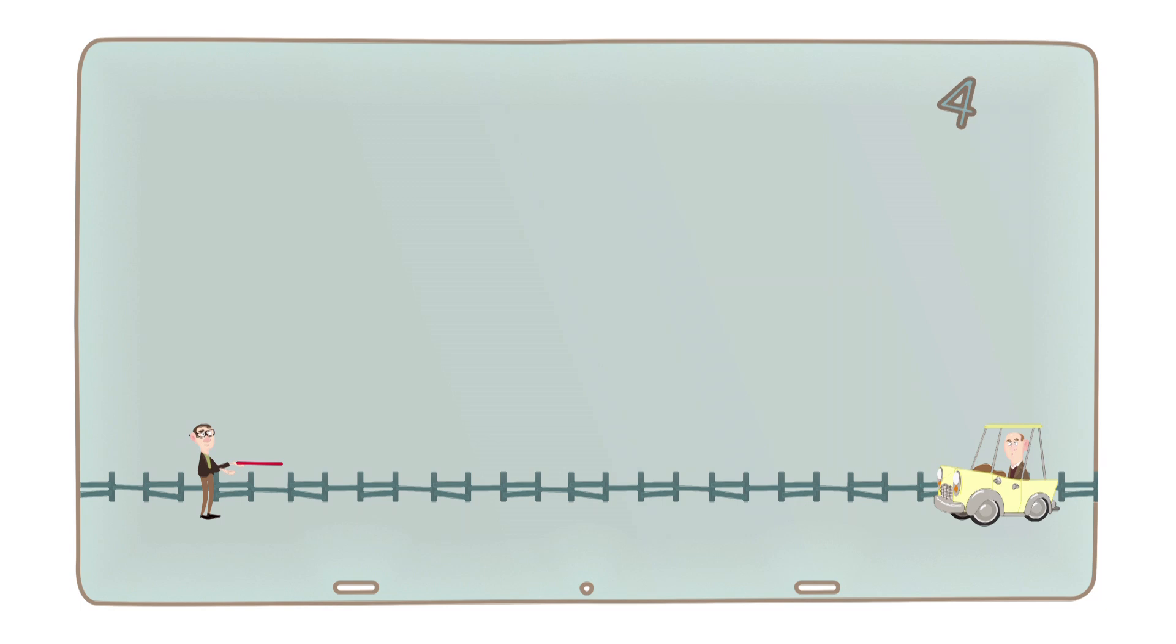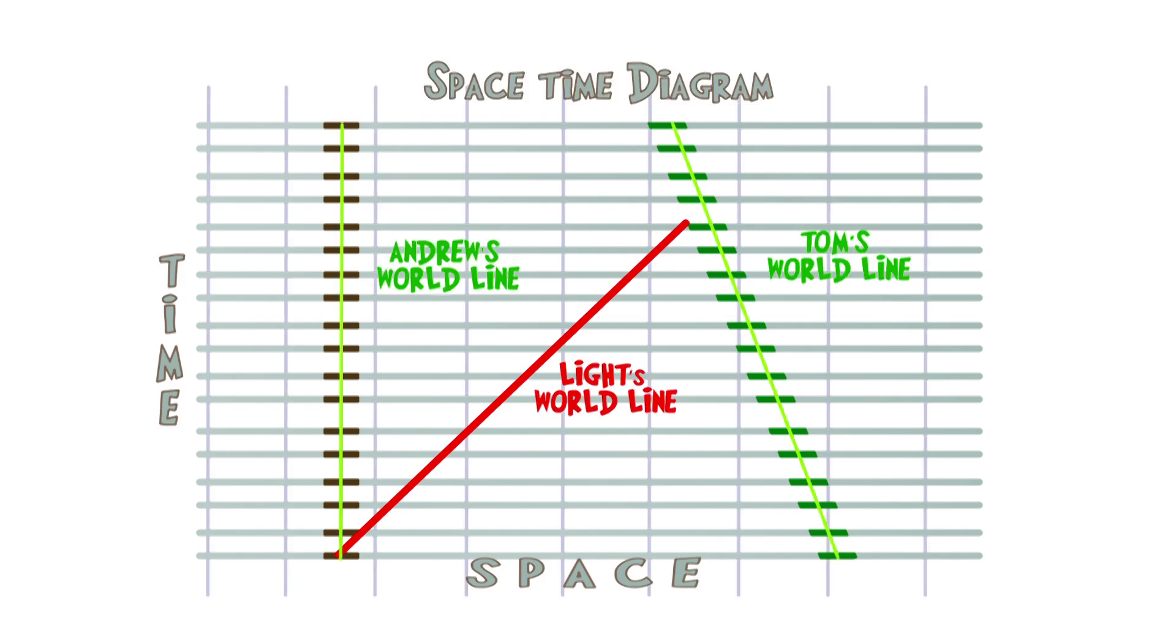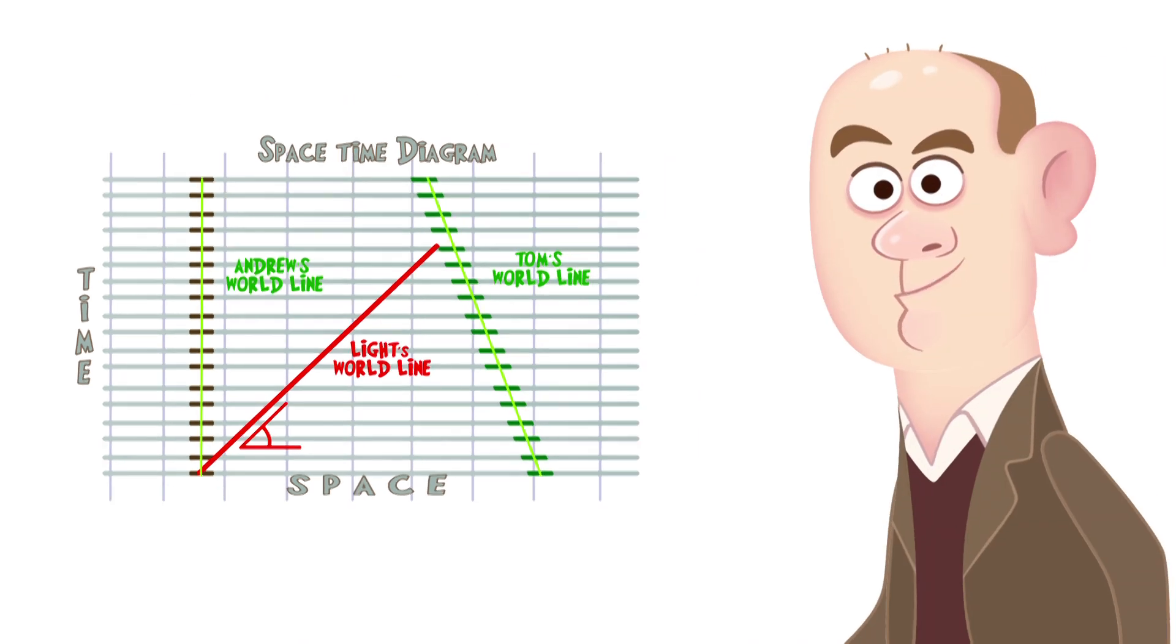First we'll need to construct the spacetime diagram. Yes, that means taking all of the different panels showing the different moments in time and stacking them up. From the side we see the world line of the laser light at its correct fixed angle, just as before. So far so good.